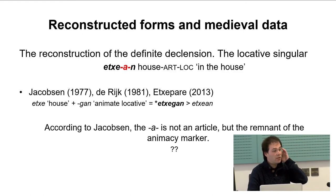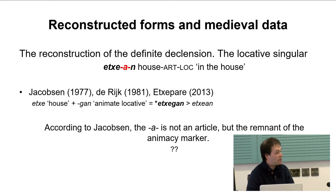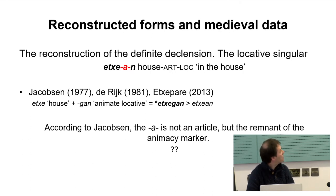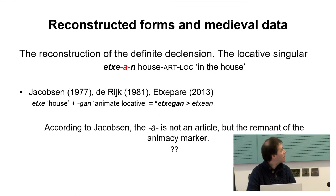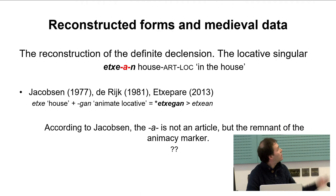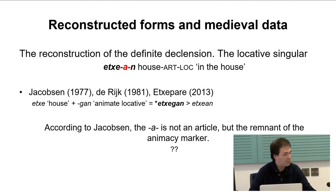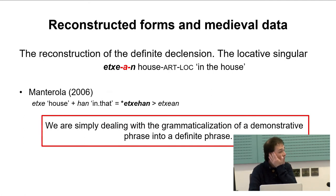I now turn to nominal morphology — two examples of the reconstruction of the definite declension. I have summarized here the discussion of the locative singular. According to Jacobsen in 1977, a definite phrase such as 'etxean' meaning 'at home, in the house' involves a lost consonant, which he thought was a voiced stop. The problem is that if we accept that it is not an article but the remnant of the animacy marker, which in Basque is 'ga', this doesn't fit very well with what we know about those phrases since they are definite.